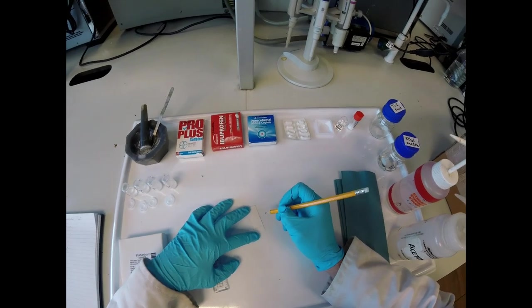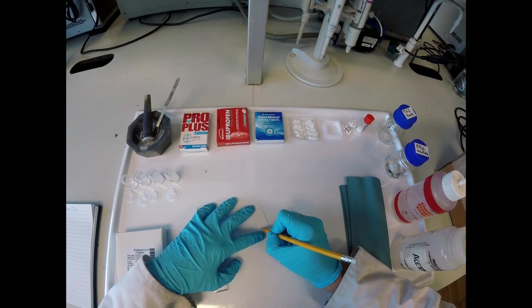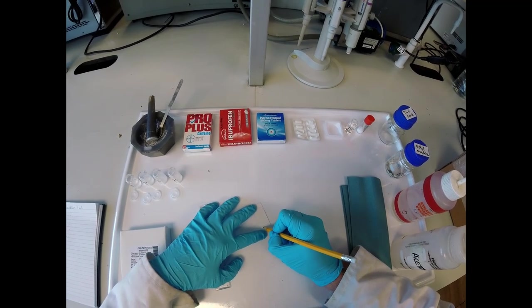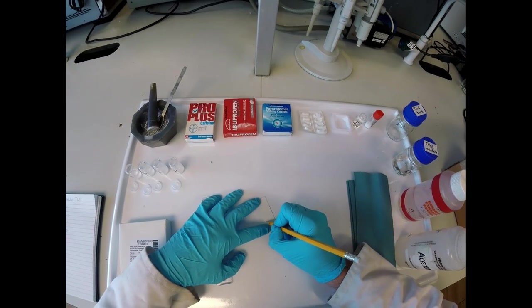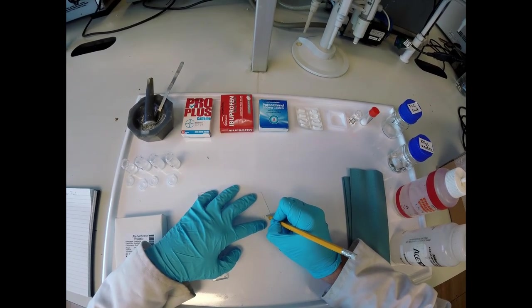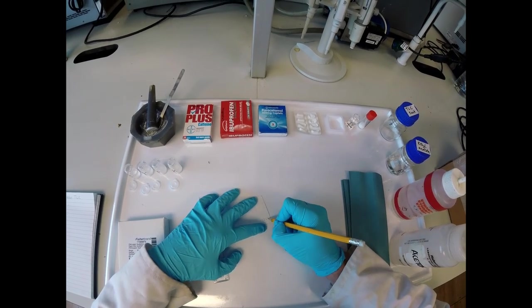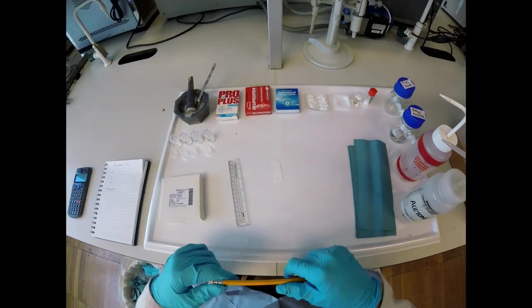Then on that baseline we're going to put four ticks, one for each sample, using pencil because it doesn't run up the plate with the solvent. Being careful as we do it not to score the silica at all, just write on it. Label all the ticks for their sample: caffeine, ibuprofen, paracetamol, and the unknown labeled X.